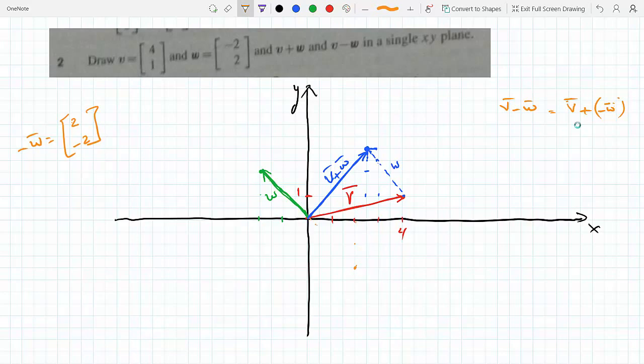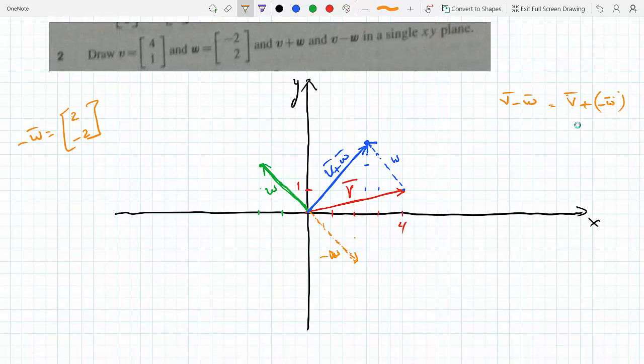So this here would be negative W. Then I would add V. I would draw this from the tip of V, so I would go 2: 1, 2, and negative 2: 1, 2. I'm drawing negative W from the tip of V, so this is negative W.